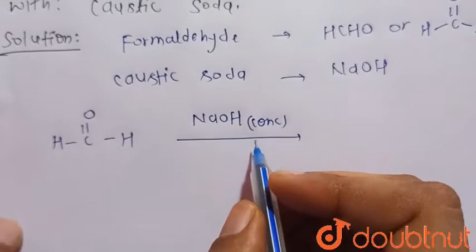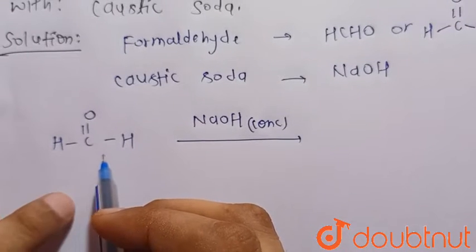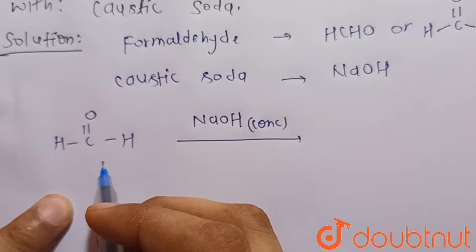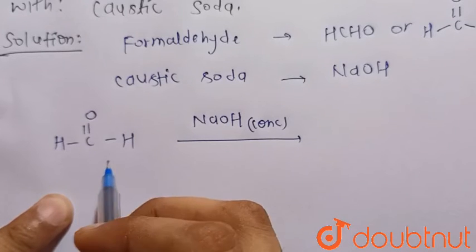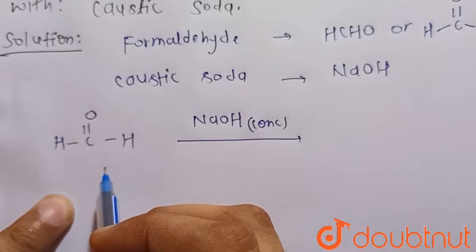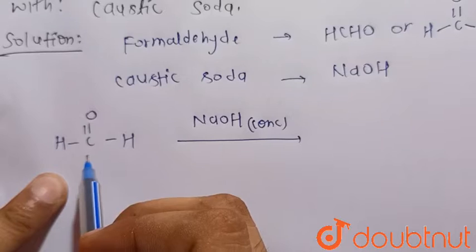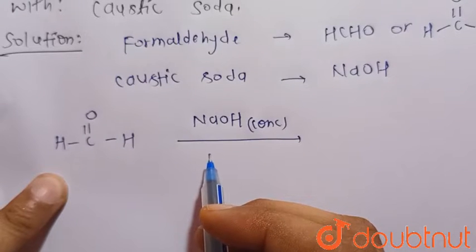So it undergoes the Cannizzaro reaction, because we know that the aldehyde having no alpha hydrogen or zero alpha hydrogen gives the Cannizzaro reaction. That is, the same compound undergoes oxidation as well as reduction.